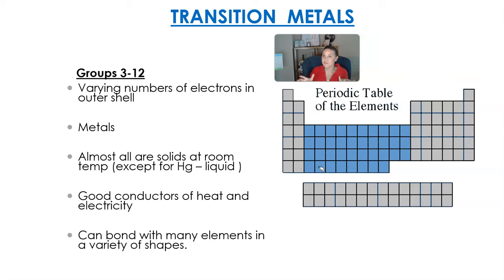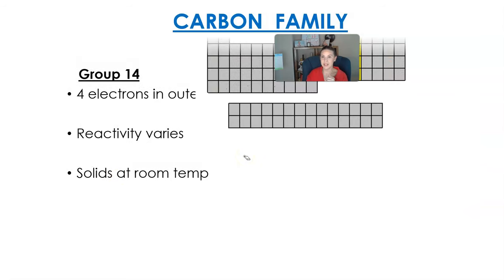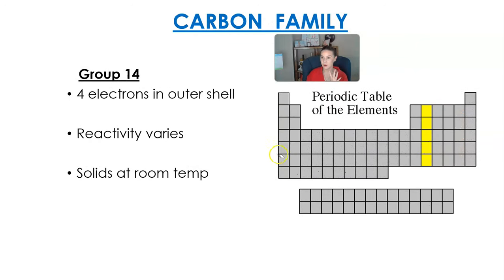The boron family, group 13, has three electrons in the outer shell. Most of these are metals, but boron itself is a metalloid — it sits on the zigzag line that separates metals from nonmetals. They're somewhat reactive and solid at room temperature. The carbon family, group 14, has four electrons in the outer shell. Reactivity varies within this group, and they're solid at room temperature.